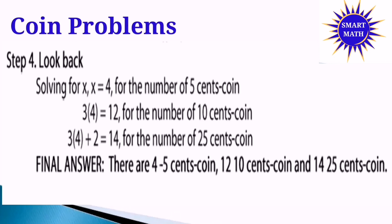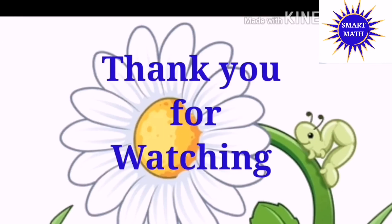Step 4: Look back. Solving for x = 4 means we have 4 five-cent coins. Then 3x = 3 × 4 = 12, so we have 12 ten-cent coins. And 3x + 2 = 3 × 4 + 2 = 14, so we have 14 twenty-five-cent coins. The final answer: 4 five-cent coins, 12 ten-cent coins, and 14 twenty-five-cent coins.